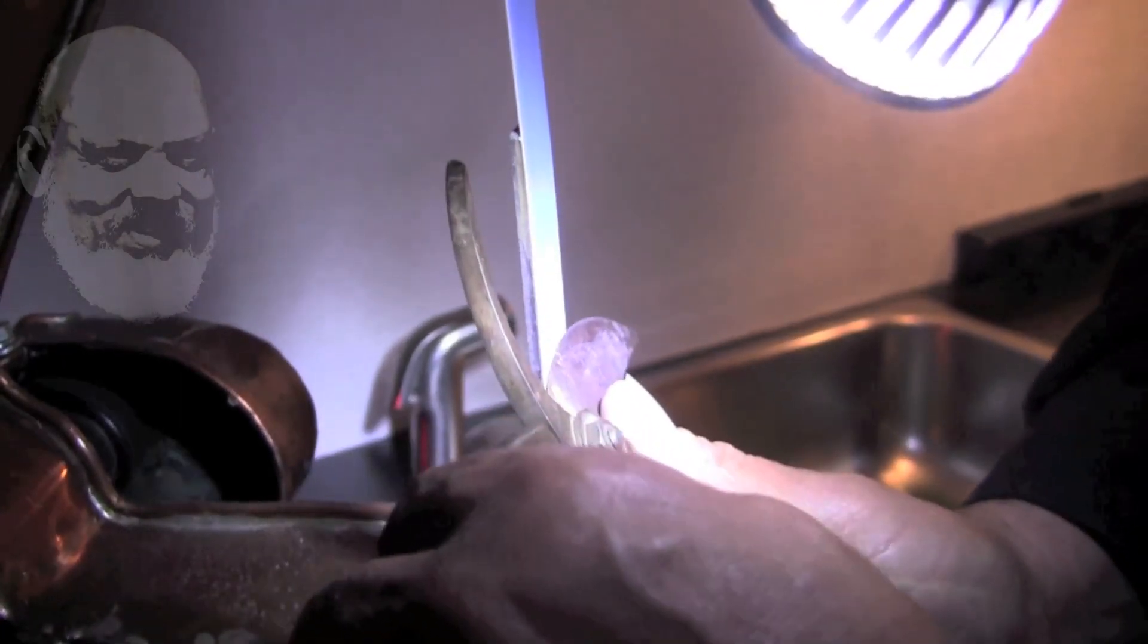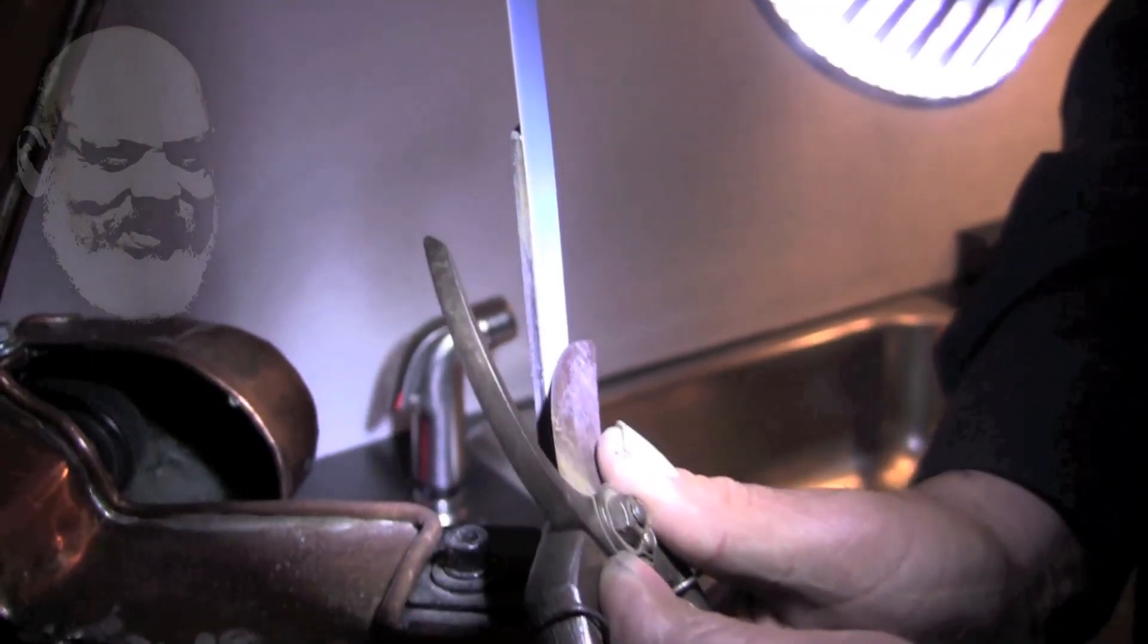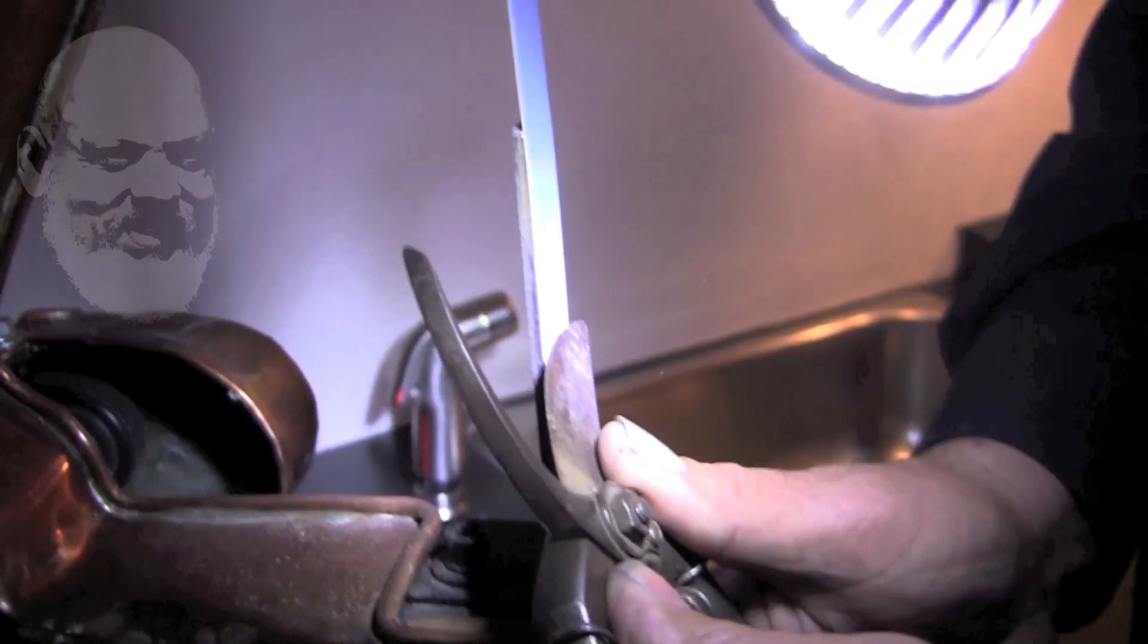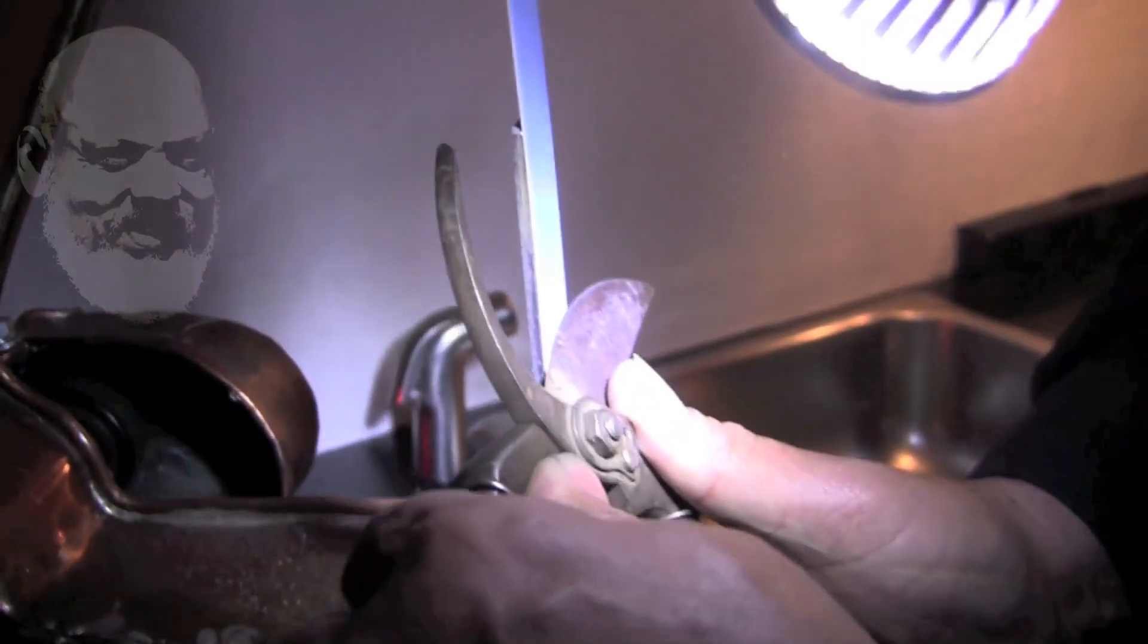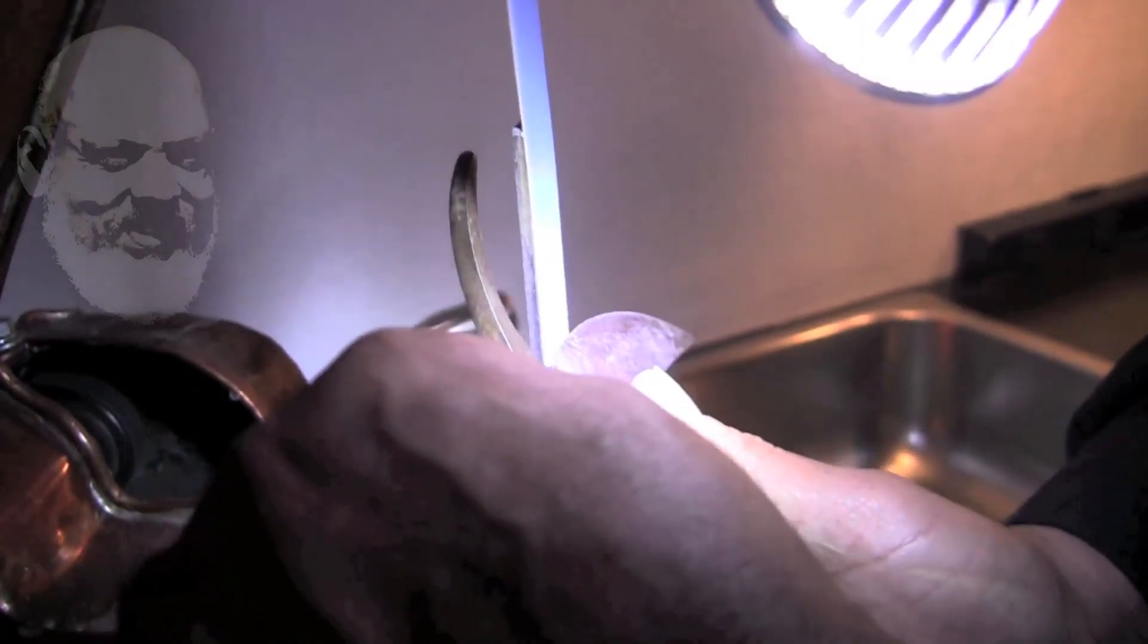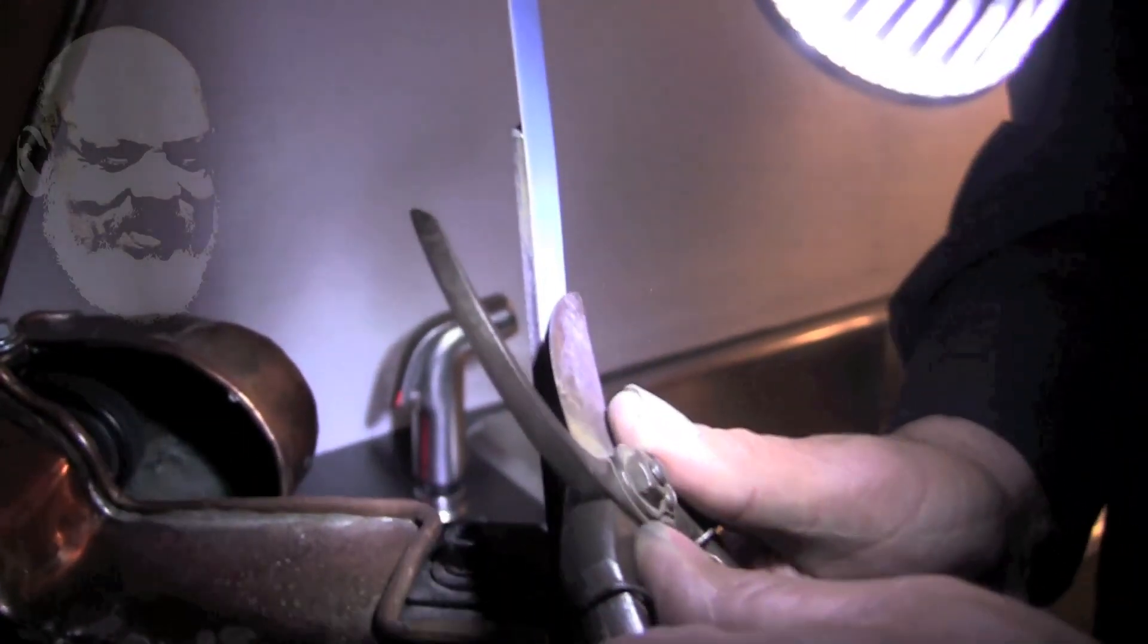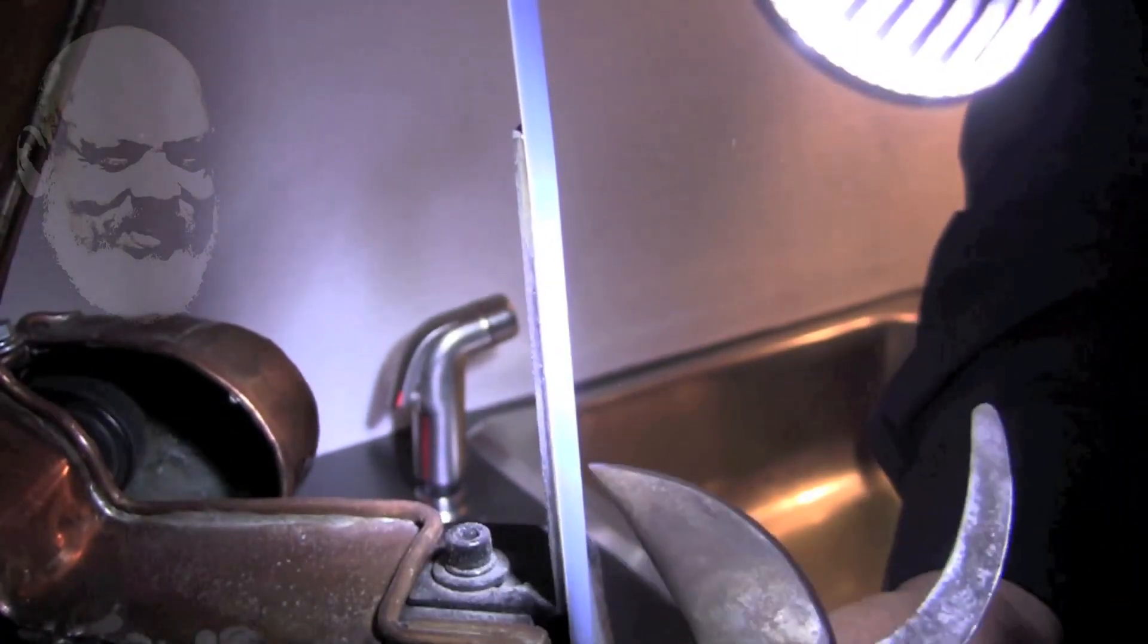I'm going to try to stay with the plane that was on there, the same angle and everything. And just remove material to where I get a nice burr. That's what I'm always looking for, is a nice burr all the way across the item, so I know that I've ground all the way to the edge.